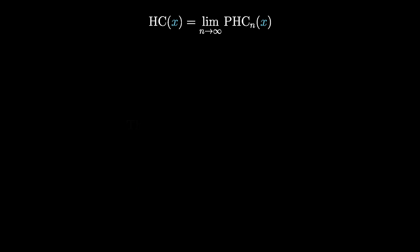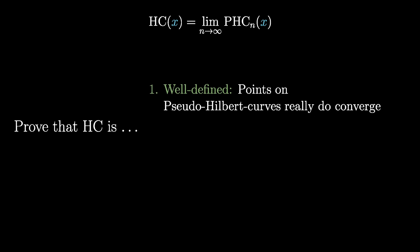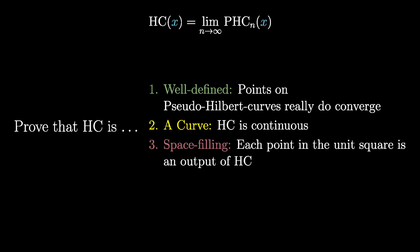Now, I'm not going to go through the proof for why this gives a space filling curve, but let's at least see what needs to be proved. First, verify that this is a well-defined function by proving that the outputs of the pseudo-Hilbert curve functions really do converge the way that I'm telling you they do. Second, show that this function gives a curve, meaning it's continuous. Third, and most important, show that it fills space, in the sense that every single point in the unit square is an output of this function. I really do encourage anyone watching this to take a stab at each one of these. Spoiler alert, all three of these facts turn out to be true.